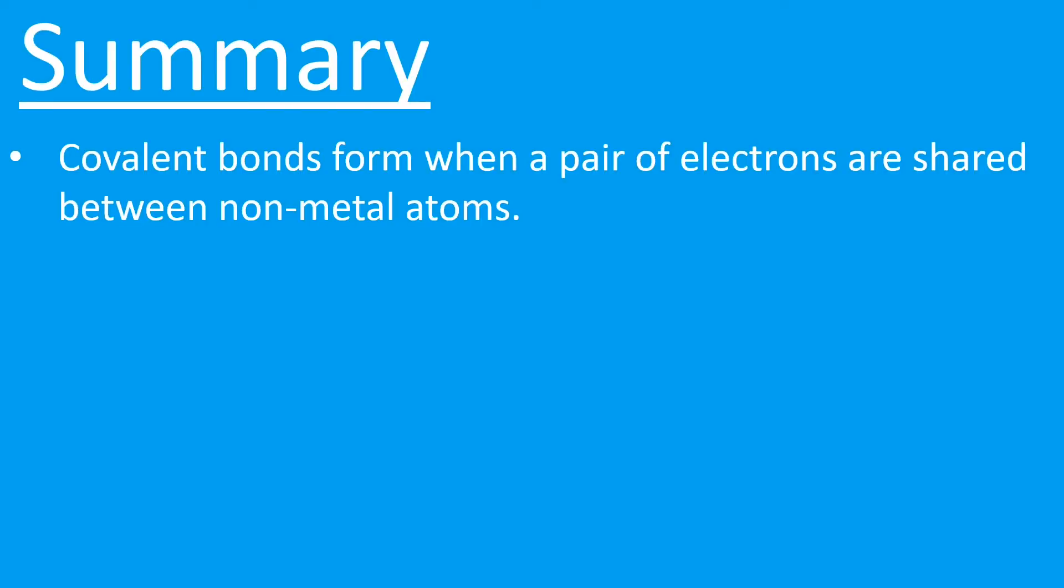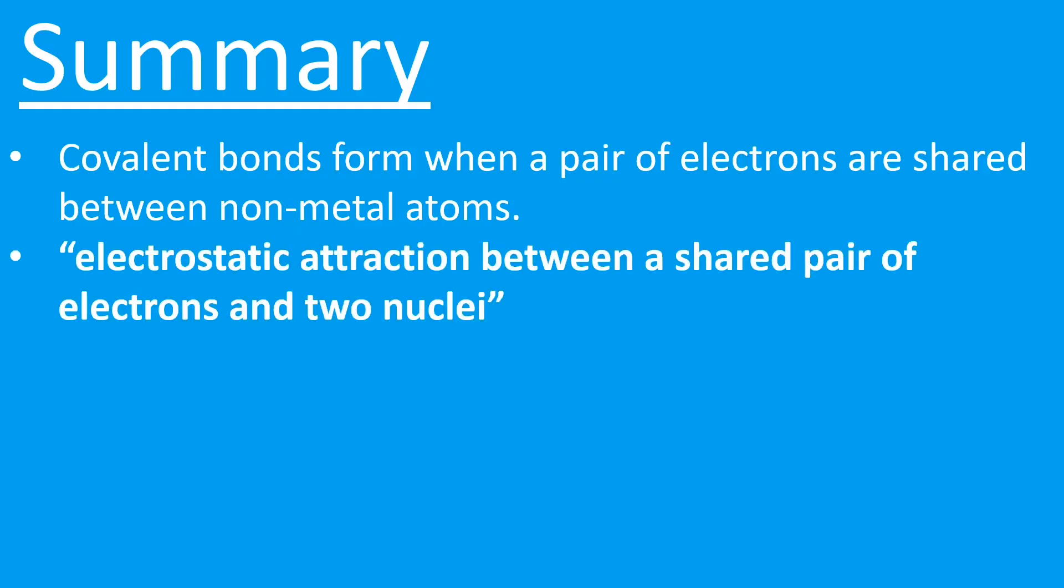Let's summarize the key points then. So a covalent bond forms when a pair of electrons is shared between non-metal atoms, and they share these electrons to gain full outer shells. The definition that we use is: electrostatic attraction between a shared pair of electrons and two nuclei.